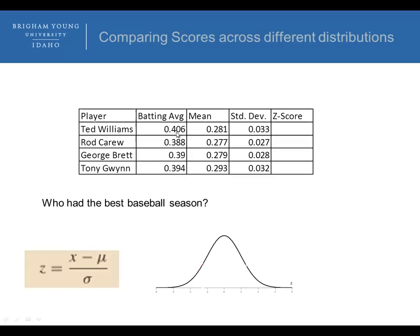For those who don't know, for instance 0.406, when you bat .406, that means that every time you're at bat, you got at least a base hit or got on first base about 40% of the time, which is very high in baseball. Rod Carew was .388, George Brett was .390, and Tony Gwynn was .394.